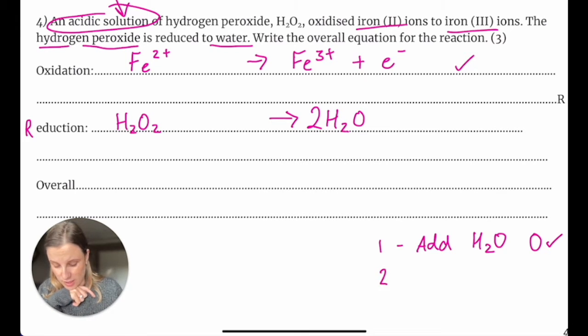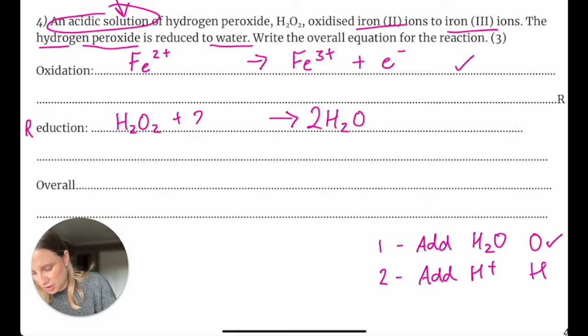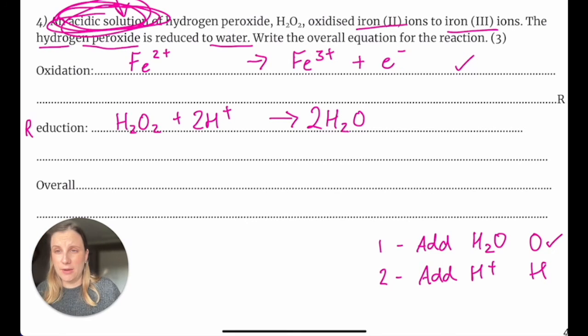The second thing we're going to do is we're going to add H+ to balance the hydrogens out. So right now I've got four hydrogens on the right and only two on the left. So I'm going to add another two H+ here. Remember I can do this because they told me it was an acidic solution. So I can add it in, no dramas. So now my hydrogens are balanced. There's four on the left and four on the right.